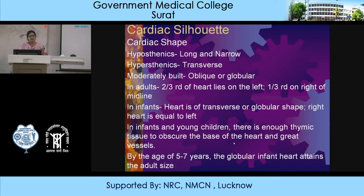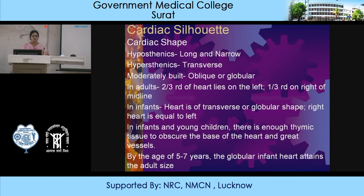In adults, two thirds of the heart lies on the left side and one third on the right side of the midline. In infants, the heart is of transverse or globular shape, and the right heart is almost equal to the left heart. In infants and young children, there is enough thymic tissue to obscure the base of the heart and great vessels. By the age of 5 to 7 years, the globular infant heart attains the adult size.